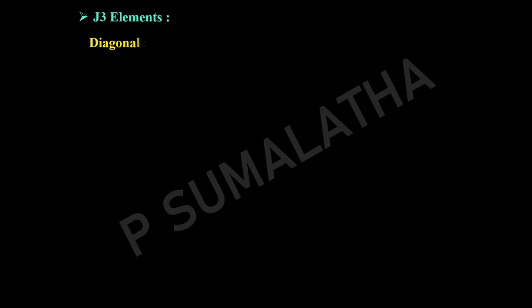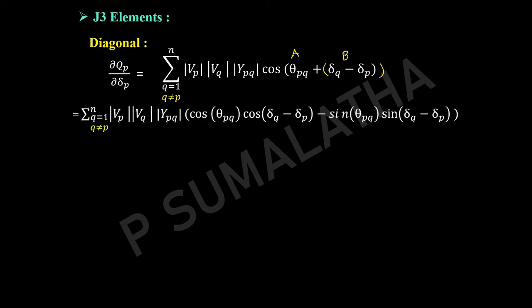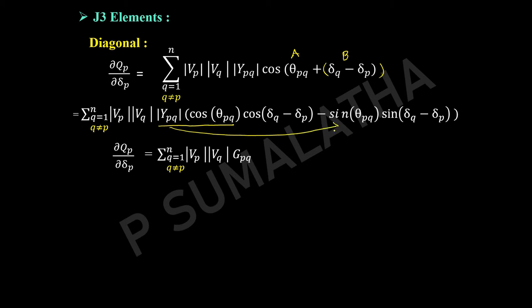For the J1 off-diagonal element ∂P_p/∂δ_q: expanding sin(θ_pq + δ_q − δ_p) as sin(a+b) = sin(a)cos(b) + cos(a)sin(b), applying δ_q − δ_p ≈ 0°, cos(0°) = 1 and sin(0°) = 0. The second term vanishes, leaving −|V_p||V_q|·y_pq·sin(θ_pq). Substituting y_pq·sin(θ_pq) = b_pq, the off-diagonal element is: ∂P_p/∂δ_q = −|V_p||V_q|·b_pq. Let us take this as equation number 8.